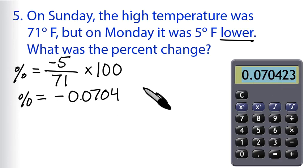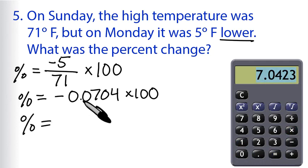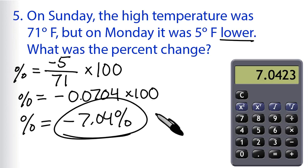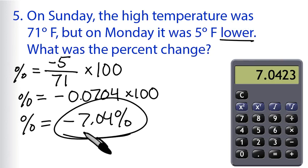So negative 0.0704 times 100 equals 7.04. The percent change equals negative 7.04%. That's super precise for the numbers we were given — it would also make sense to just leave it as negative 7%. Either one is correct, but your teacher might want a specific number of digits. So if the original temperature was 71 degrees and Monday was 5 degrees lower, the percent change is negative 7.04%, or a 7.04% decrease.